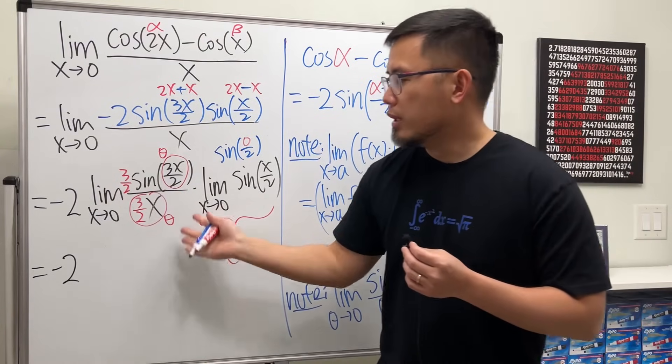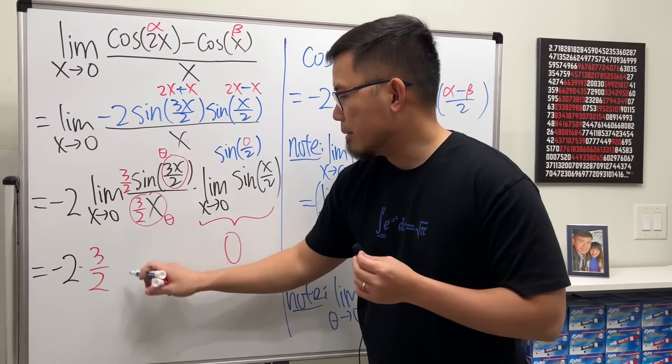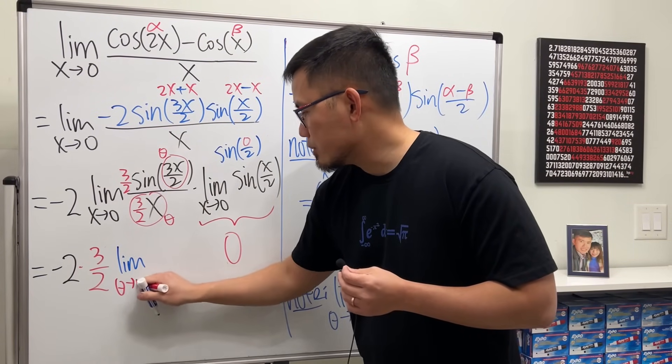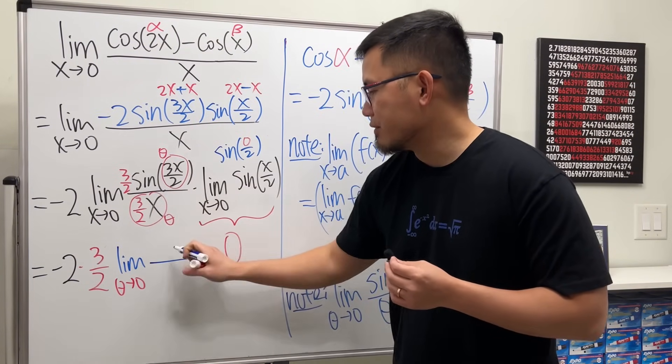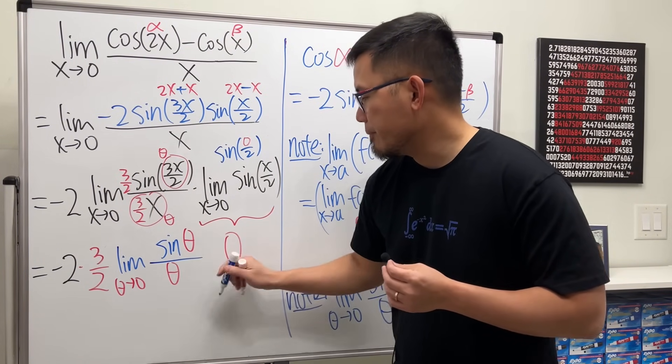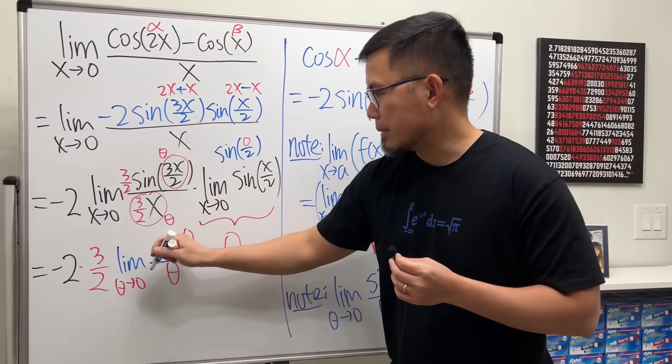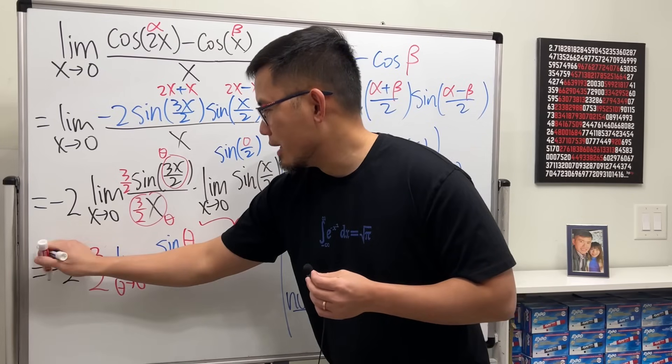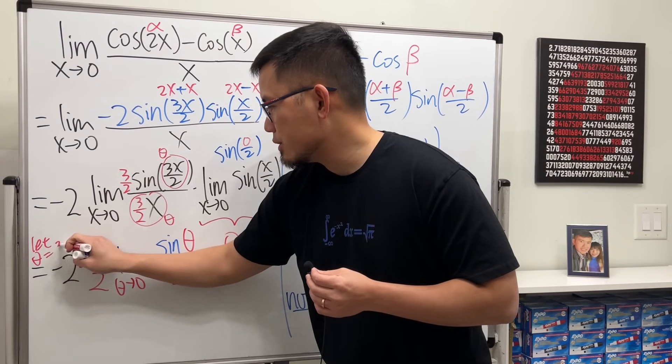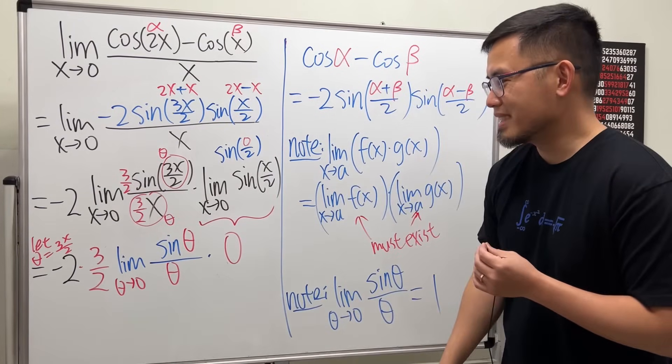So all the way in the front we still have the negative 2, and this 3 over 2 is just a constant multiple, so you can put it on the outside like so. And then for this limit, I'm just going to write it as the limit as theta approaching zero. And here we have sine of theta over theta. Again, theta is equal to 3x over 2, so perhaps you'll write it down somewhere that theta equals 3x over 2 to make it look more legitimate. So in fact...